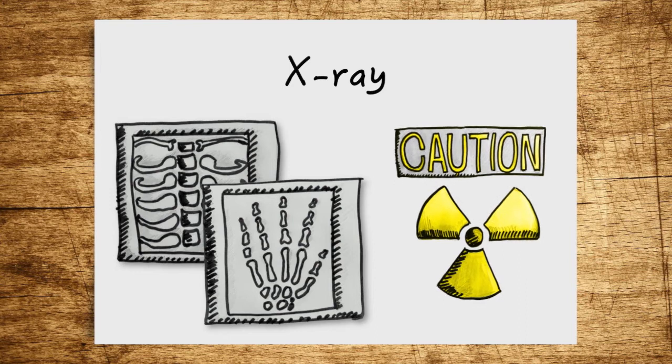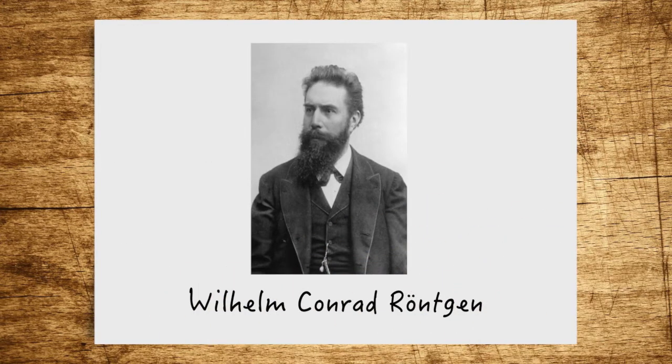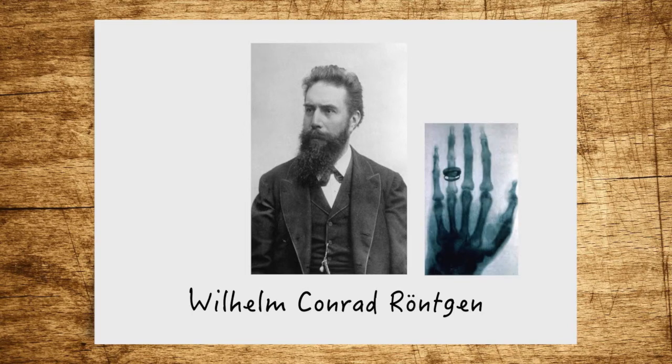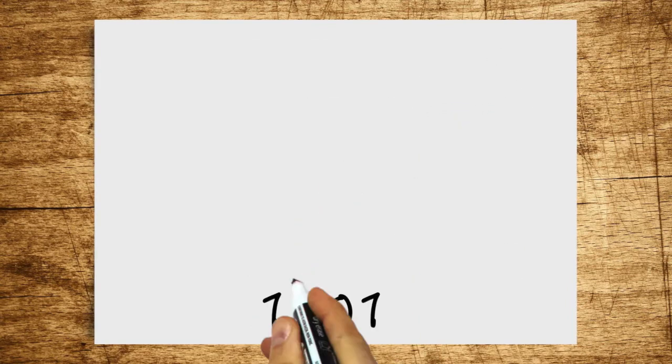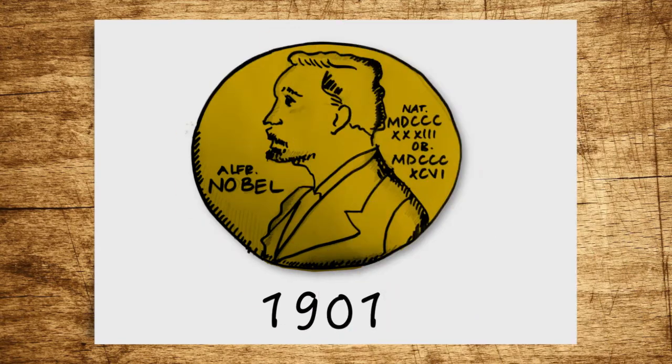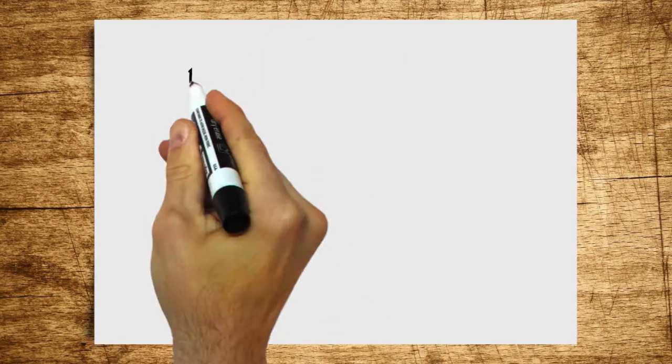You've probably heard the term X-ray before. So what exactly are X-rays, and what are they used for? It was the German physicist Willem Konrad Roentgen who first described this type of radiation, calling it X-radiation, which is where the modern term X-ray comes from. In 1901, Willem Roentgen received the first Nobel Prize in Physics for his research.